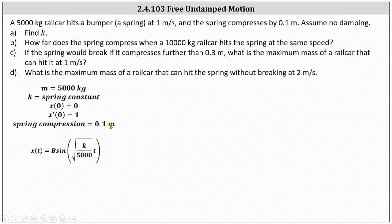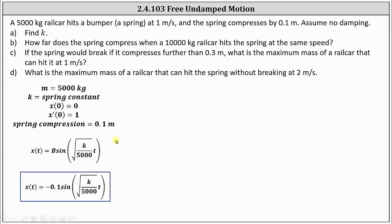The spring compression is 0.1 meters, which indicates the amplitude of the sine function must be 0.1. Because the spring is compressed first, we use B = −0.1. So x(t) = −0.1·sin(√(k/5,000)·t). The amplitude equals the spring compression because x(t) only involves the sine function, and because the spring compresses first, B = −0.1. Now we find the derivative to use x'(0) = 1 to determine k.